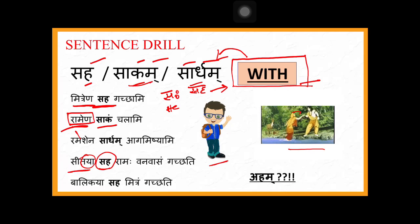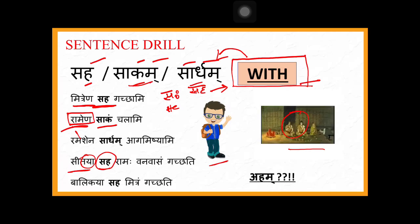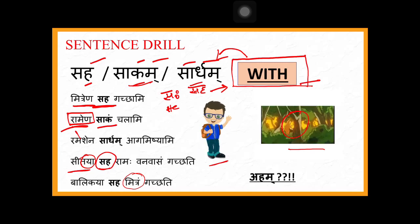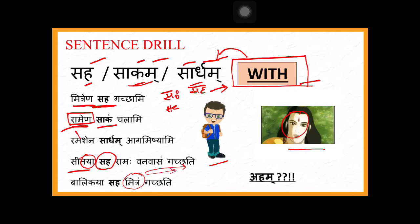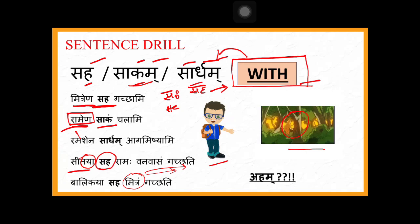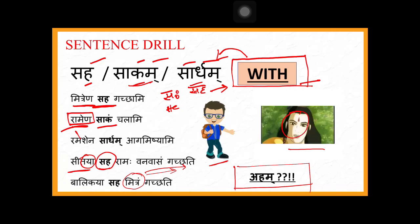Balikaya saha mitram gachati — a friend goes with the girl. Mitram is napumsakalinga; without more context we don't know if it refers to a boy or girl. Balikaya saha mitram sita gachati, balikaya saha mitram radha gachati — this is how saha, sakam, or sartham are used with tritya vibhakti. But when using aham as subject, verb changes accordingly.